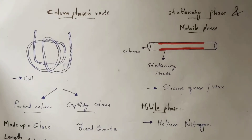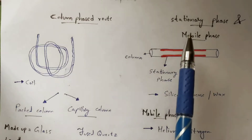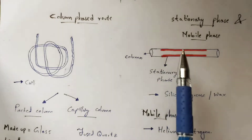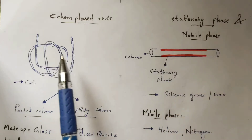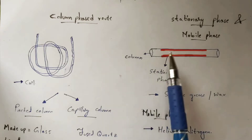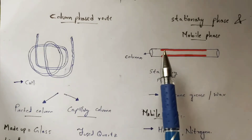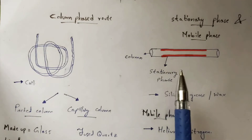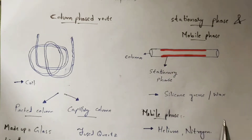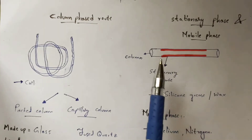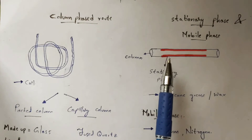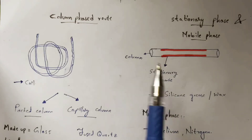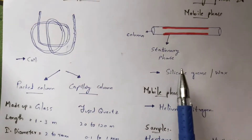In chromatography there are two phases: stationary phase and mobile phase. In the case of the stationary phase, if you look at a zoomed cross-section of the column, there is a stationary phase coating on the inner surface of the column. This stationary phase is made up of silicon grease or wax.